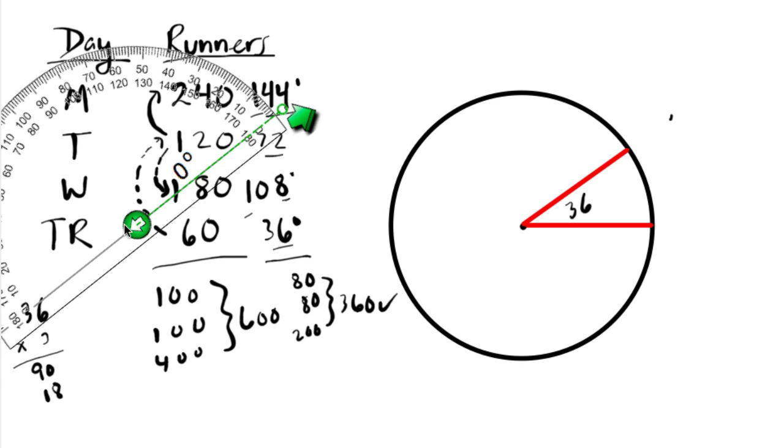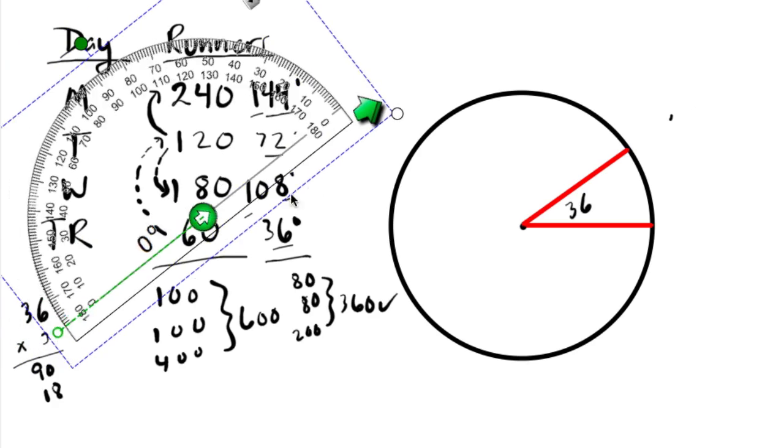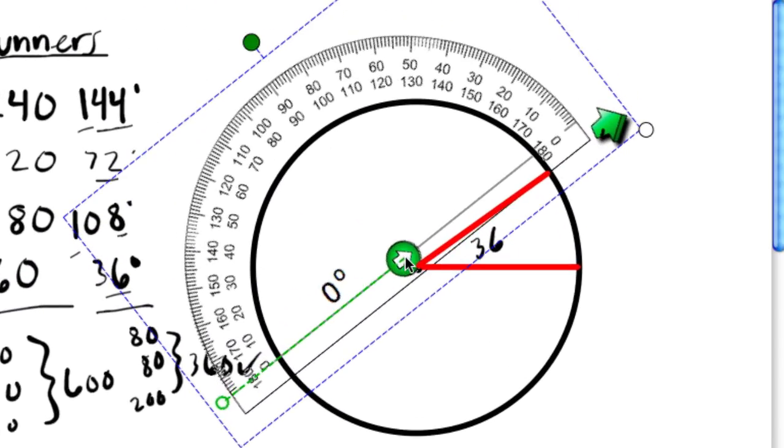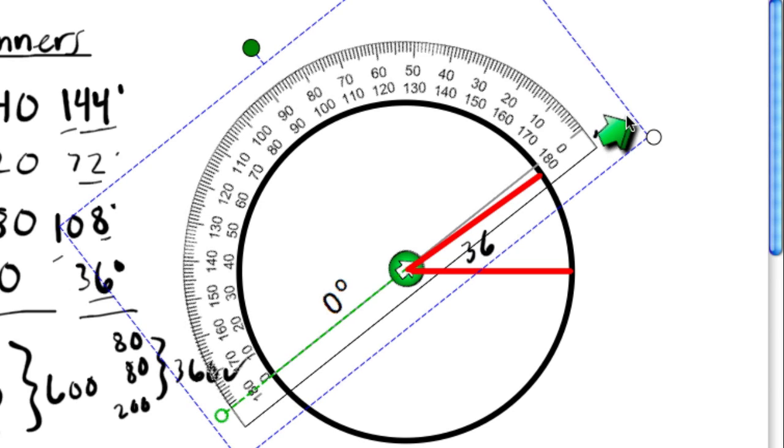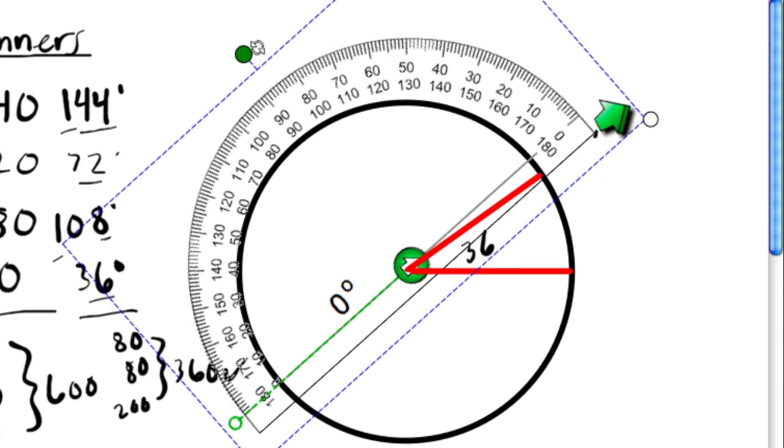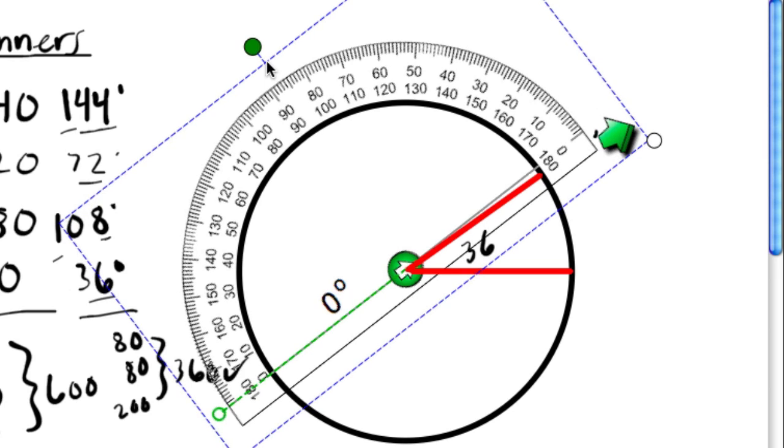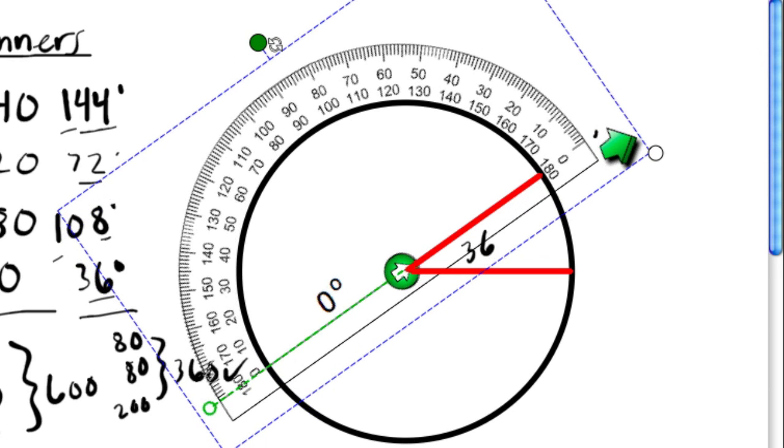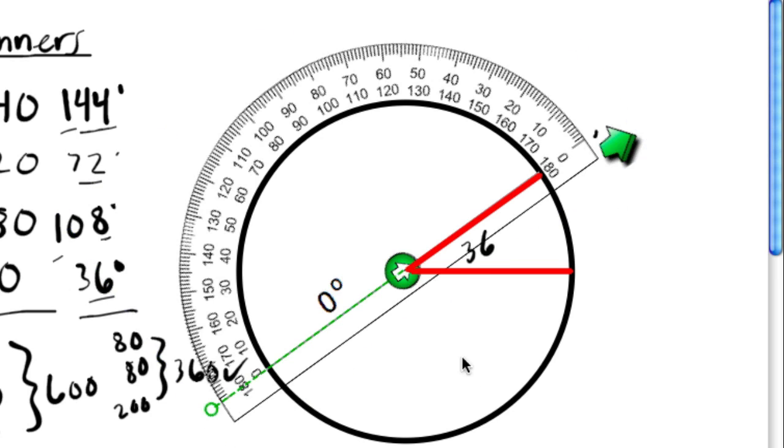So if I drag this protractor back over, the key is now to line it up with the last line you drew. You want it to line up perfectly with that. That's how this goes on a circle graph. You're always building on the last line you drew. So there we go. This is rather difficult to use.